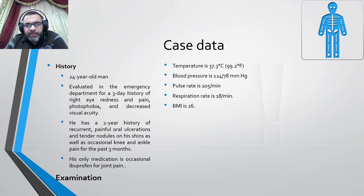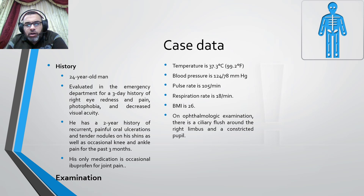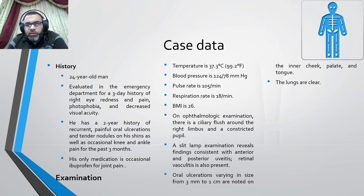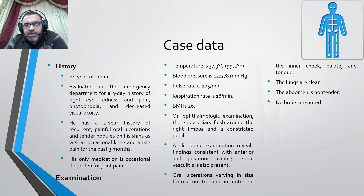Slit lamp examination revealed findings consistent with anterior and posterior uveitis; retinal vasculitis is also present. Oral ulcerations varying in size from 3mm to 1cm are noted on the inner cheek, palate, and tongue. The lungs are clear, the abdomen is non-tender, no bruits are noted, and the left knee and right ankle are swollen. Peripheral pulses are normal.